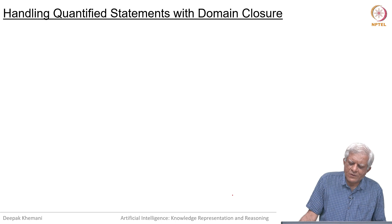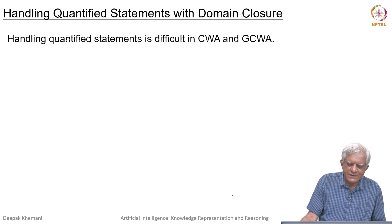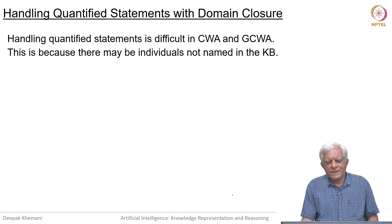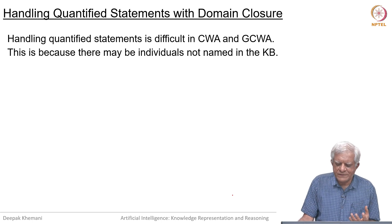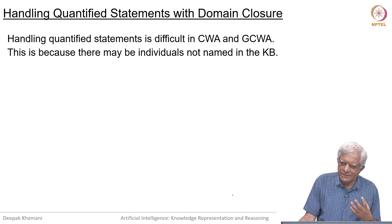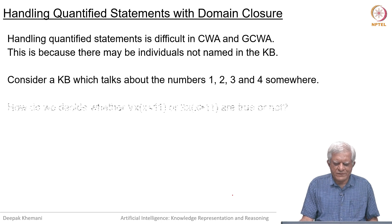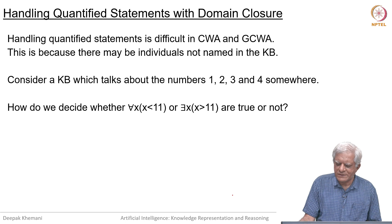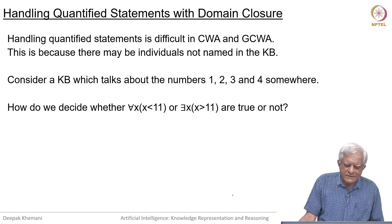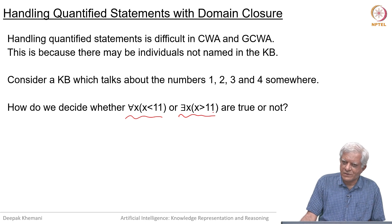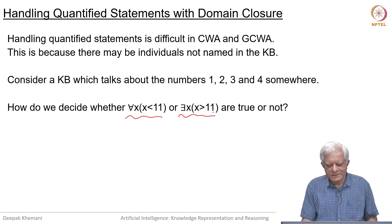Another problem with the closed world assumption — and with the generalized closed world assumption — is that it is not easy to handle quantified statements. This is because there may be individuals not named in the knowledge base, and you do not know how to say that certain predicates are not true of those unnamed individuals. For example, in a knowledge base about the four numbers 1, 2, 3, 4, how do we decide whether 'for all x, x is less than 11' or 'there exists an x such that x is greater than 11' is true, when we do not know all the individuals in the domain?